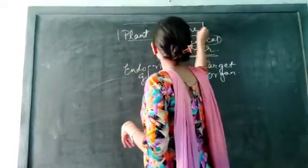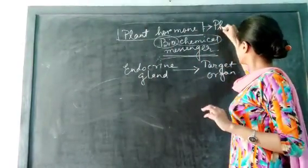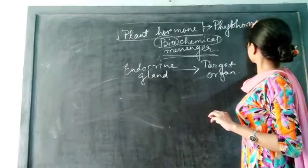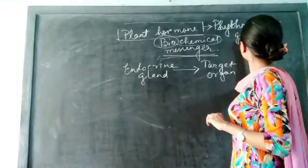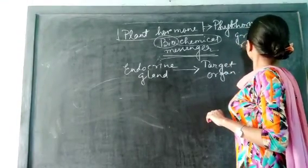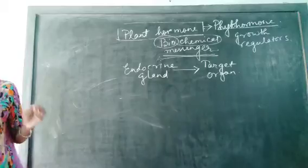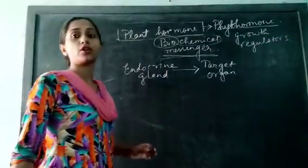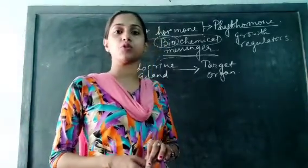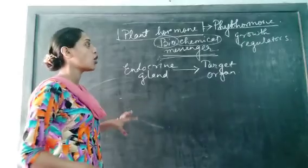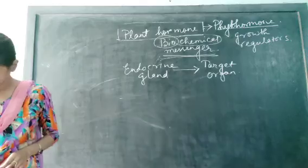Now, this plant hormone, this group of plant hormone is given a specific name. This name is termed as the phytohormone. And this phytohormone are termed as the growth regulators. That is why the phytohormones are termed as the growth regulators.